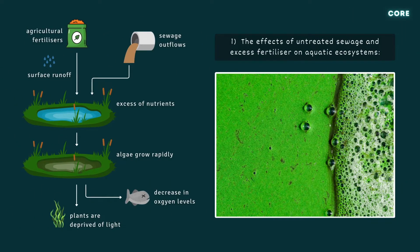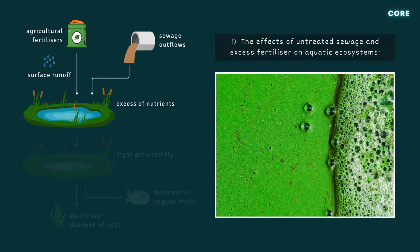Untreated sewage and agricultural fertilisers can have a devastating effect on aquatic ecosystems if they find their way into the water supply. When sewage is emptied into rivers, or rainwater contaminated with fertilisers runs off the land, microscopic algae in the water are supplied with an excess of nitrates and phosphates.